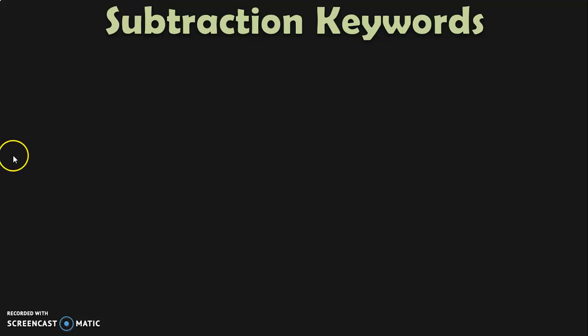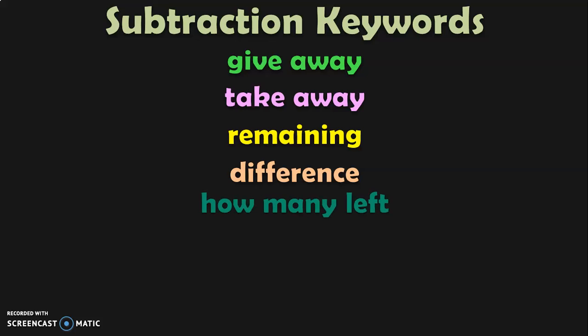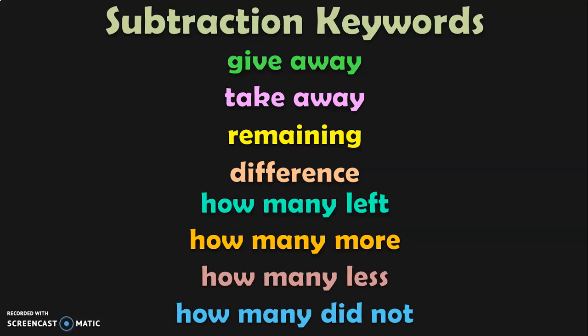We are going to see some important keywords used in subtraction. It is very important for children to know these keywords because when they deal with word problems, it will be easy to identify if the problem is addition, subtraction, multiplication, or division. When you see the words give away or take away, the problem is related to subtraction. The answer in subtraction is called remaining or difference. Other keywords are: how many are left, how many more, how many less, and how many did not. When you see such terms, it is a subtraction problem.